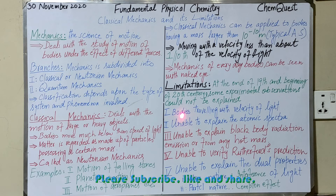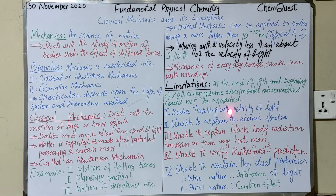The first limitation: classical mechanics was not able to explain the motion of bodies — whether subatomic particles, atomic particles, or any body — traveling with the velocity of light. It failed to explain the motion of such bodies.